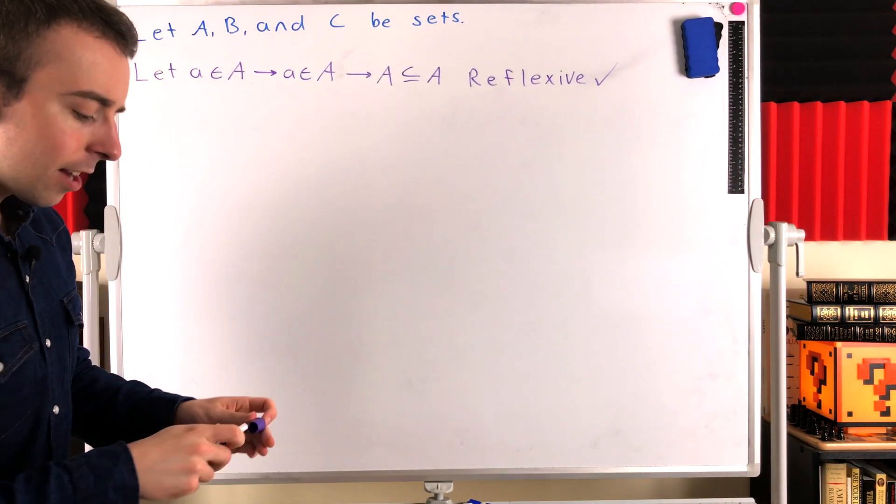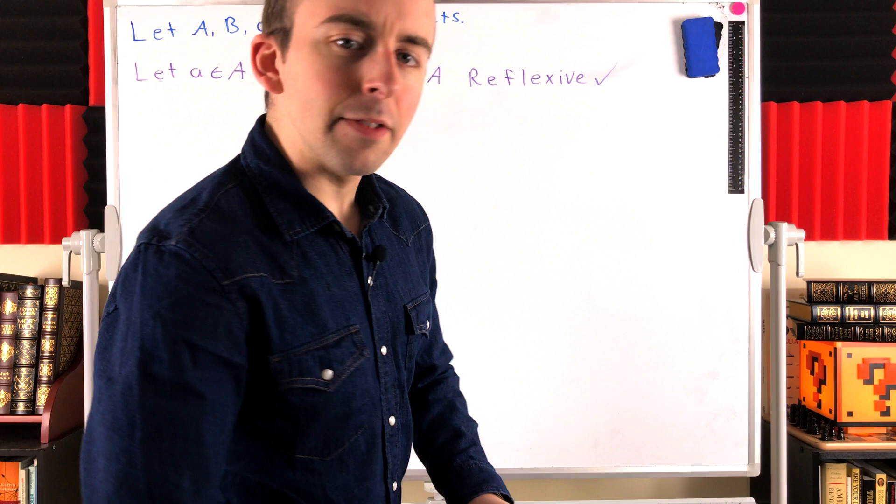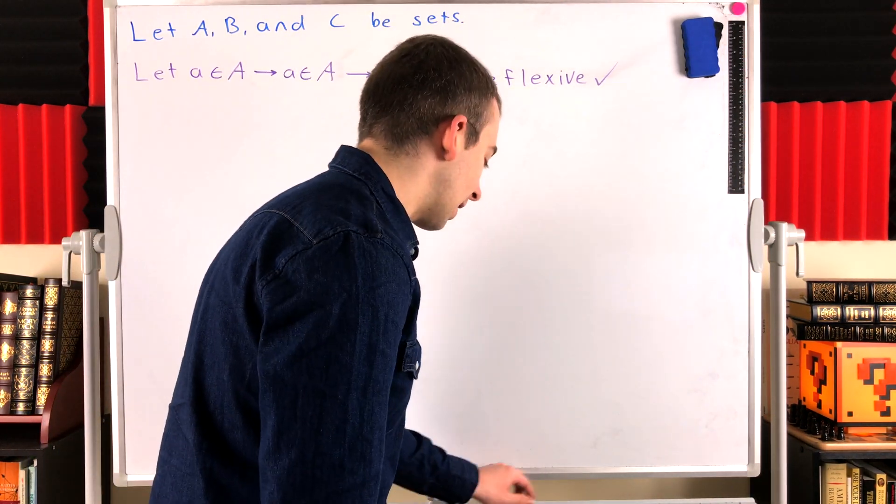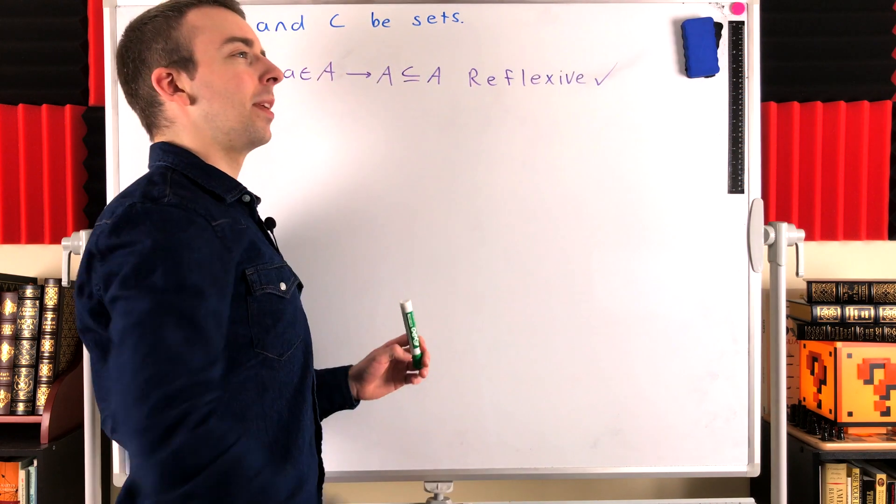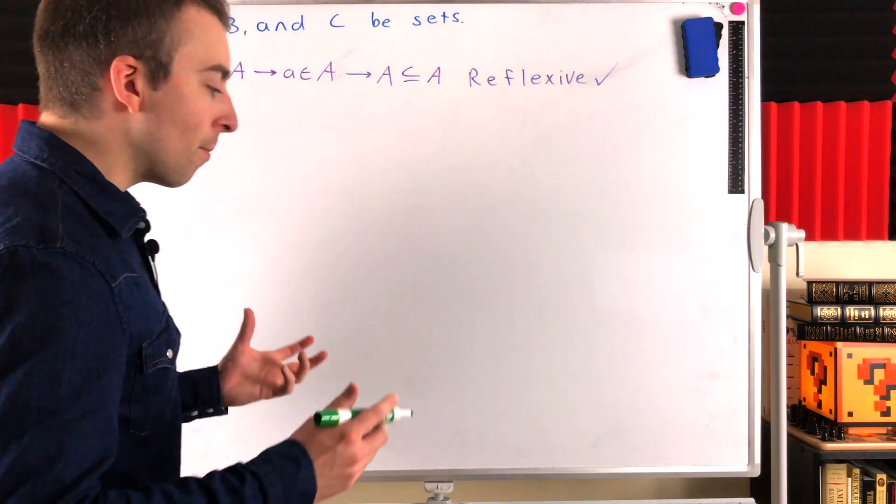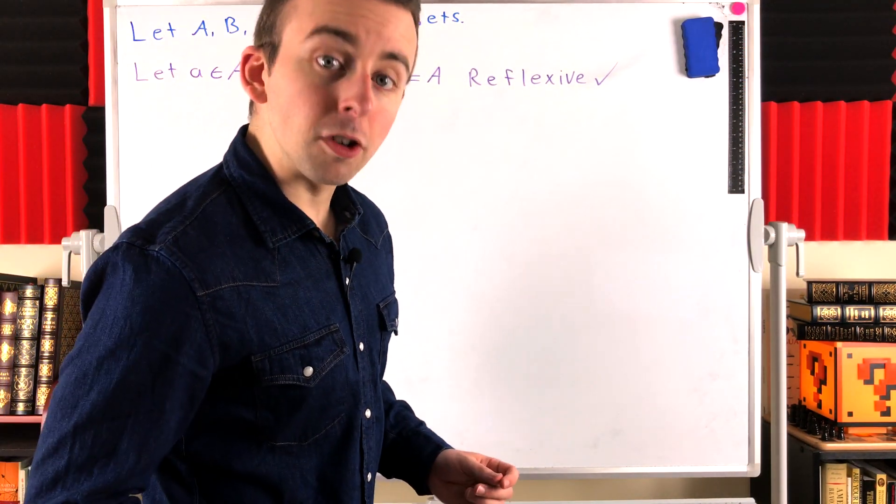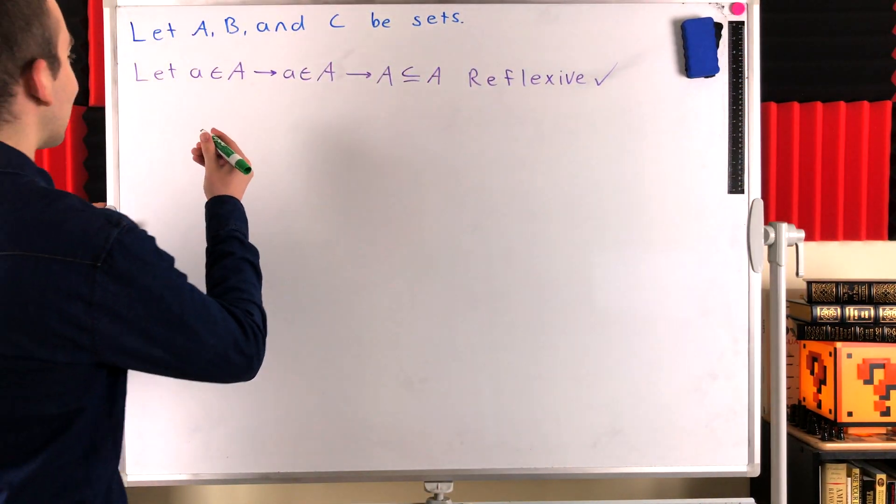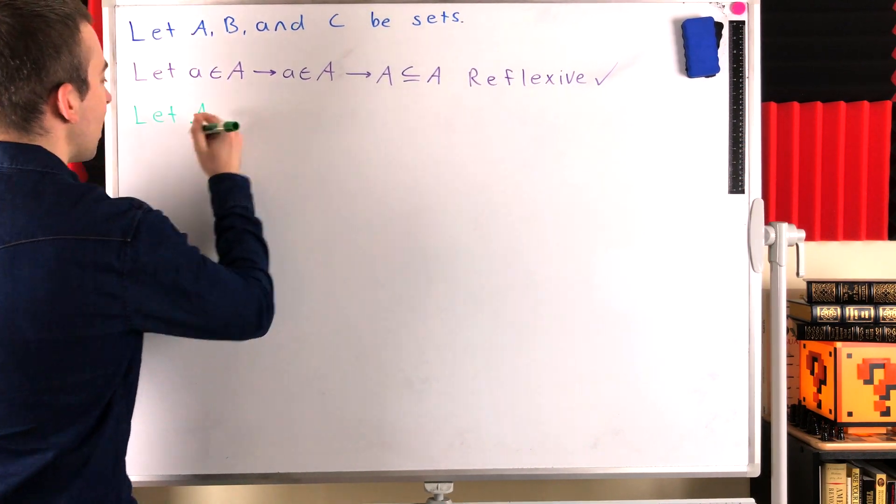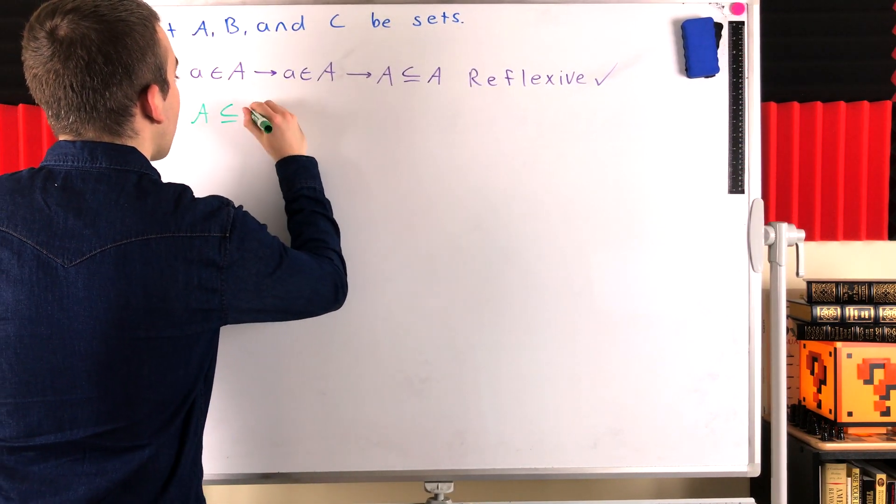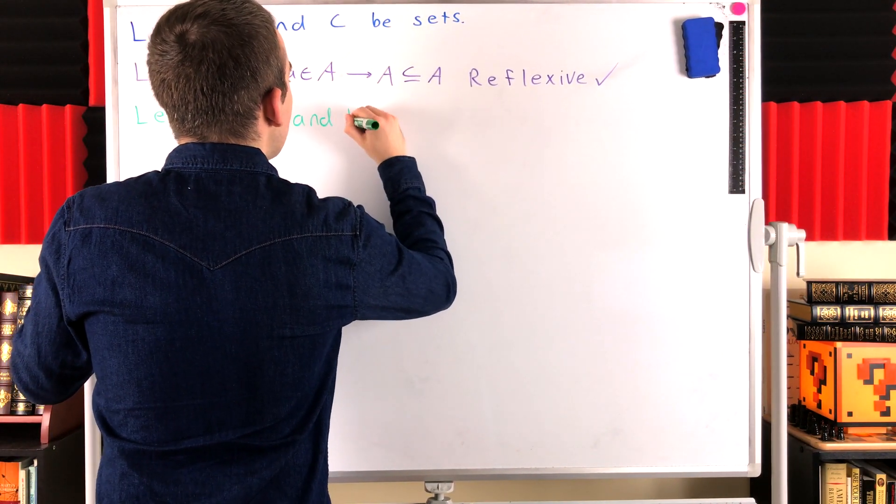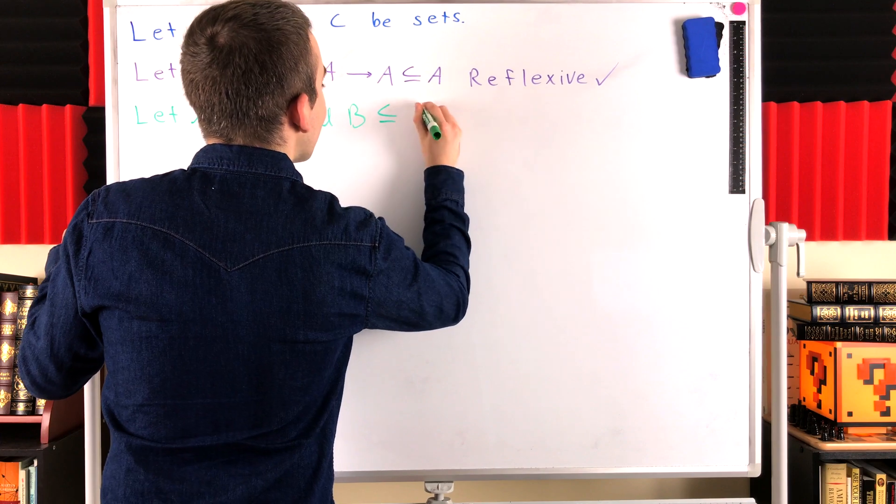All right, there's that out of the way. Now, how about transitivity? Is the subset relation transitive? Let's write, and let's use this green. There's a loud plane going over outside. Hopefully you can't hear it too much. All right, so what does it mean for the subset relation to be transitive, if it is? Well, let's set it up. Let A be a subset of our set B, and we'll let B be a subset of our set C.